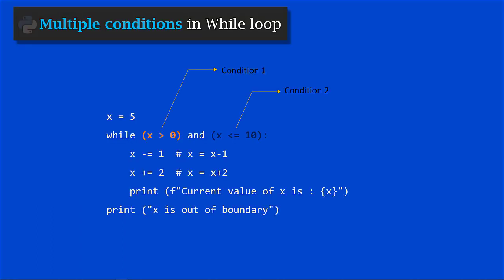This is how you can use multiple conditions in while loop. You can check more than one condition — two or three — separated by AND, OR logical operators, depending on how you want to implement the code.